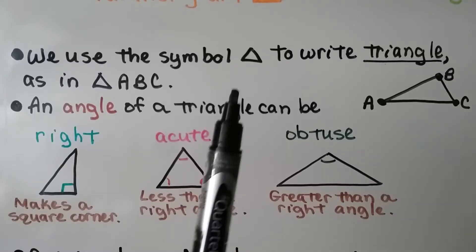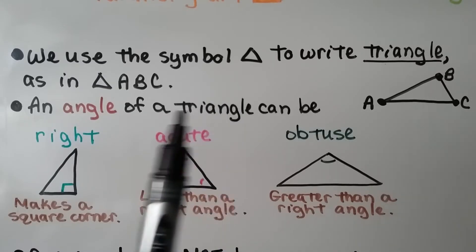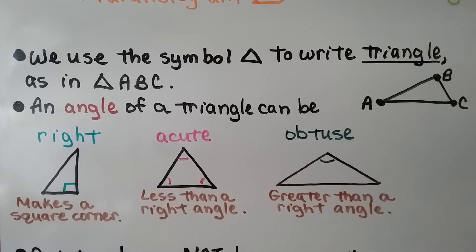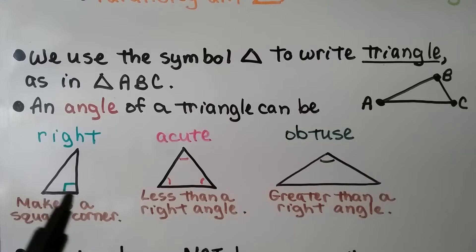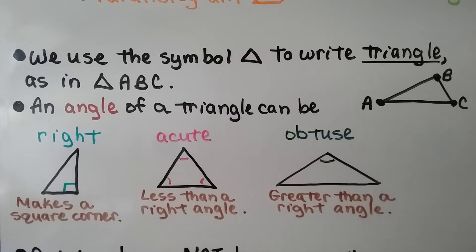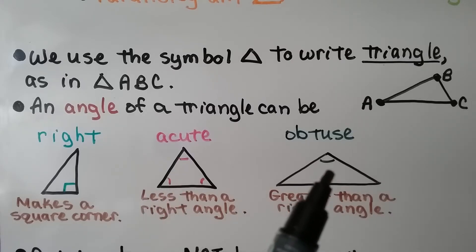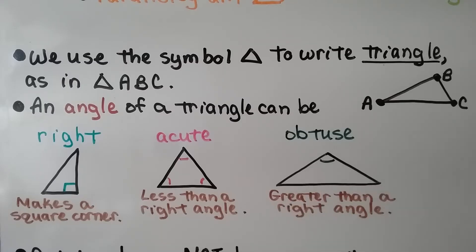We use this little triangle symbol to write 'triangle,' as in triangle ABC. An angle of a triangle can be a right angle — it makes a little square corner, and you'll see this little symbol showing it's a right angle. Acute angles are less than a right angle; we have three of them in an acute triangle. An obtuse angle is greater than a right angle — we have one in this obtuse triangle.